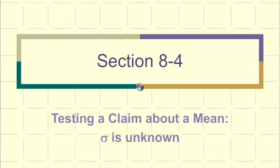All right, class. So now we're going to cover section 8.4, which is testing a claim about a mean when our sigma, so our standard deviation, is unknown.